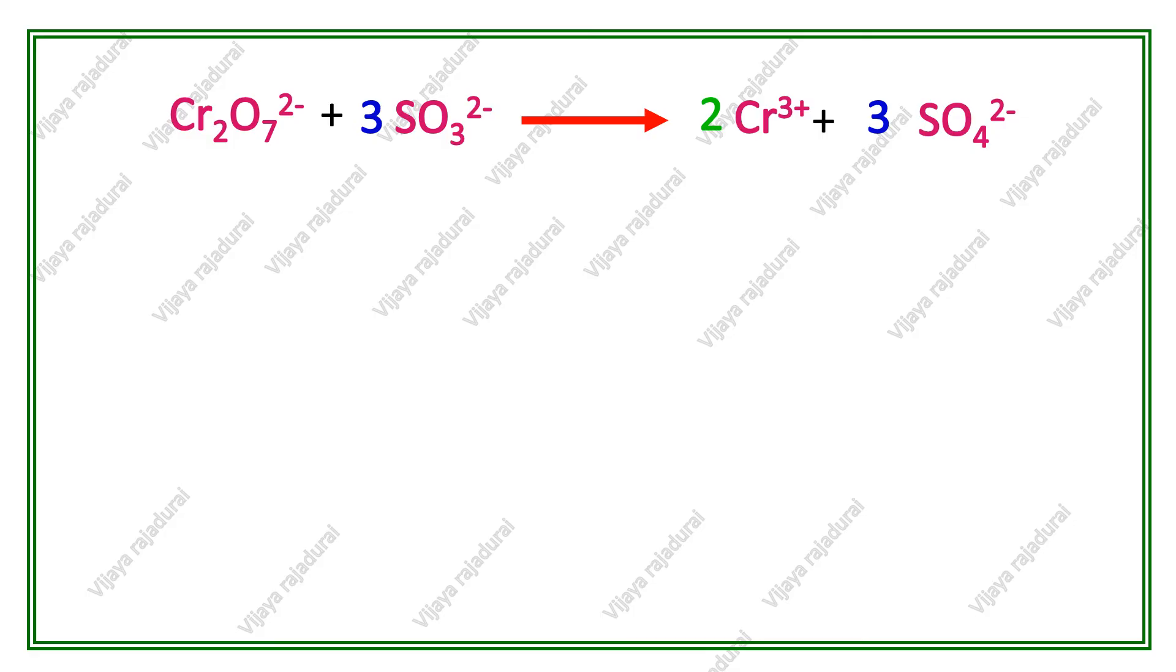Check the charges on both reactant and product sides. On the reactant side, dichromate has 2- charge, three sulfite ions have 6- charge. Product side has two chromium 3+ giving 6+ charge, and three sulfate ions producing 6- charge.